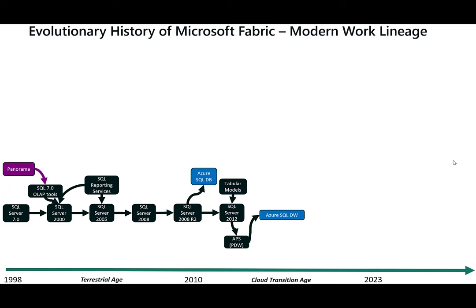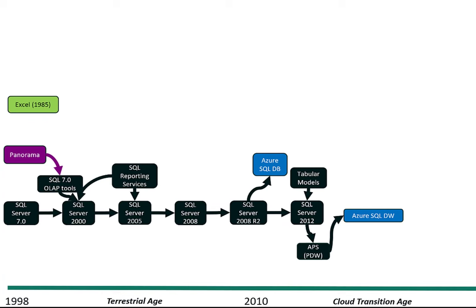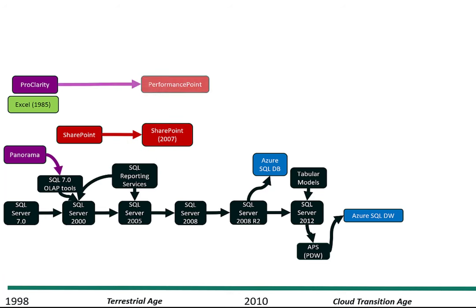Let's take a look at the modern work lineage. Even before the timeline starts, Excel was launched around 1985. ProClarity was formed sometime in the 90s and became an acquisition by Microsoft — it was extremely valuable because it was designed to work really well with OLAP cubes. SharePoint was launched somewhere around the year 2000. Then with SharePoint 2007, you saw some integration between ProClarity and SharePoint.